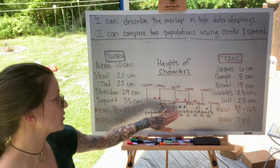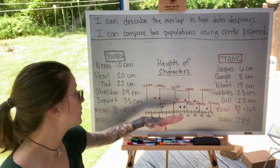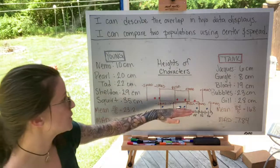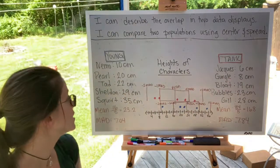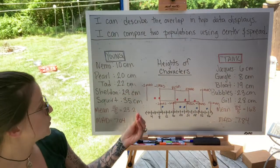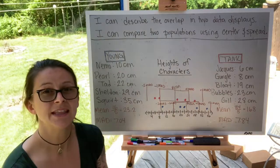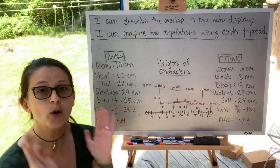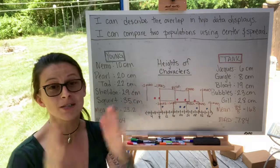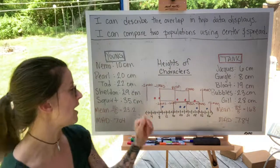Here we see the heights of the characters displayed as a dot plot. The blue dots are the young characters. The red dots are the tank characters. And we want to look at the mean and the mean absolute deviation because both of these samples are symmetric in general. They're not skewed right or left.